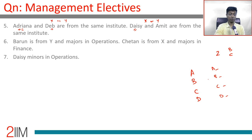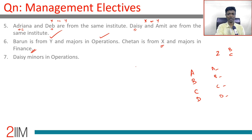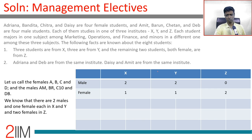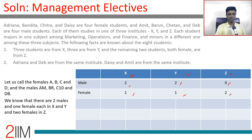Barun is from Y and majors in Operations — brilliant! We can directly place Barun in Y with Operations as his major. Chetan is from X and majors in Finance, so we write that in directly. Deb minors in Operations. So we now know exactly who is in which institute and what they are majoring in for these students — that's very useful.